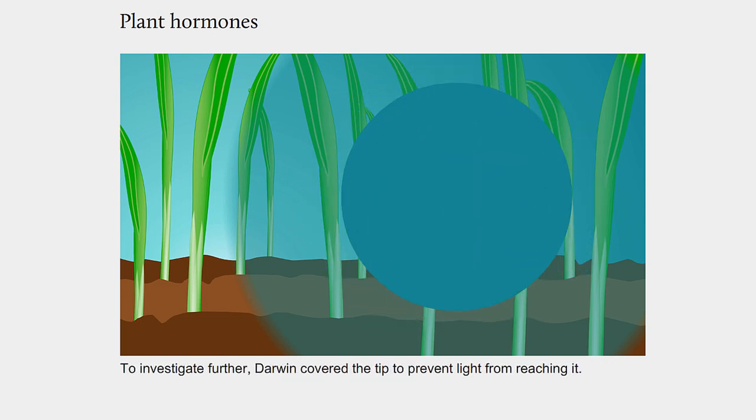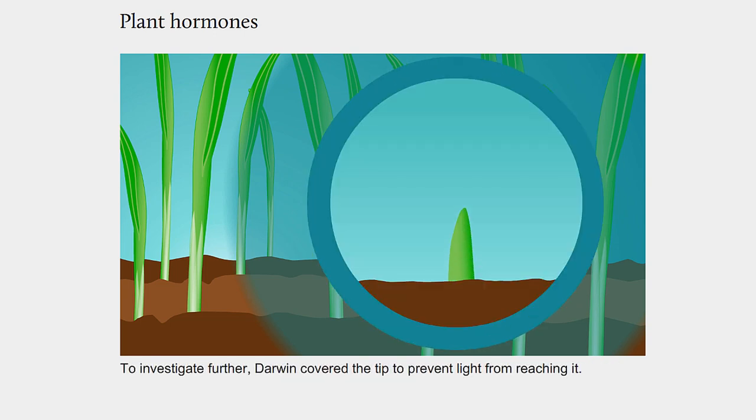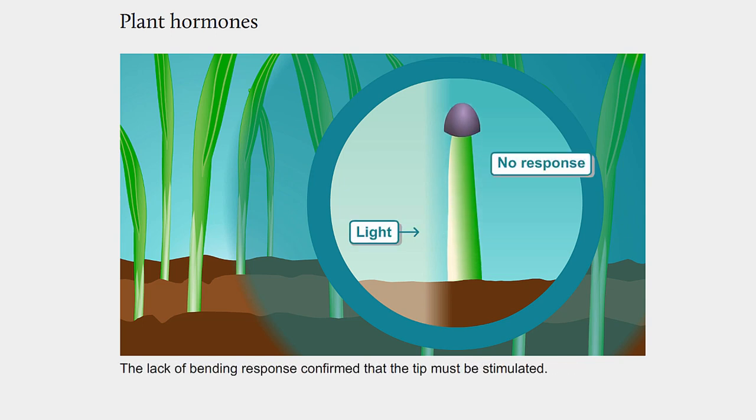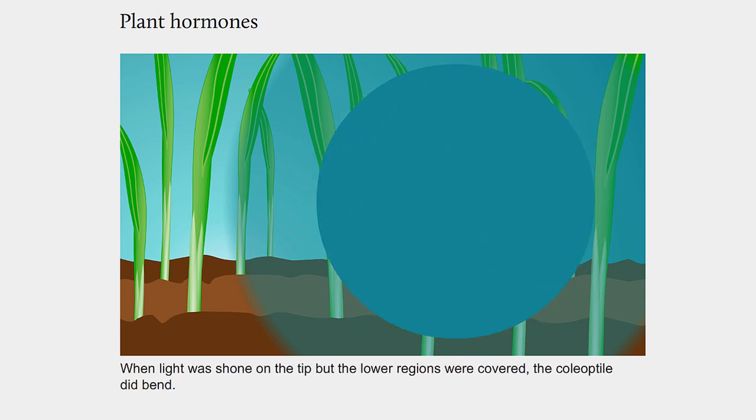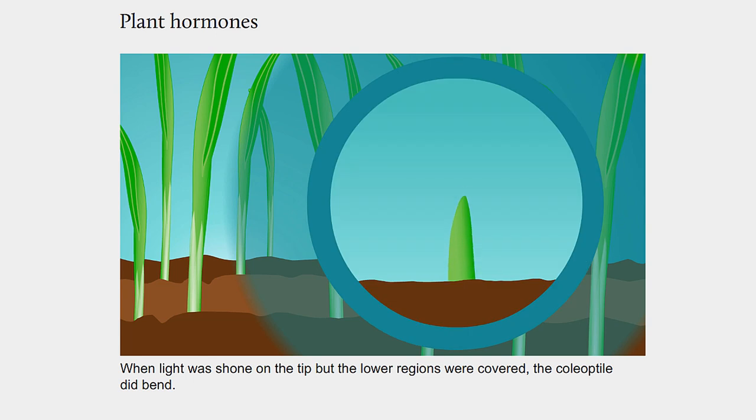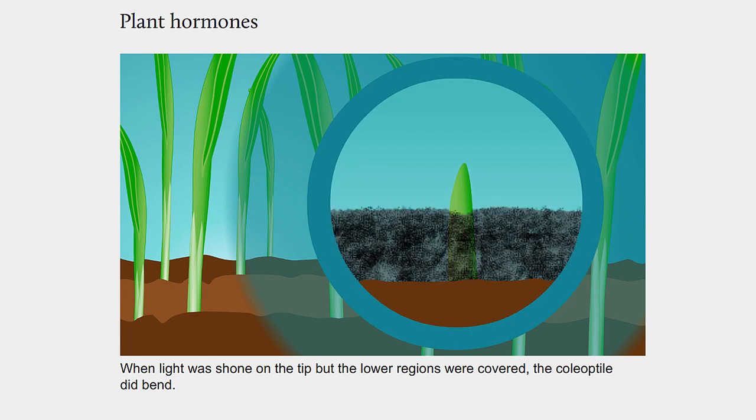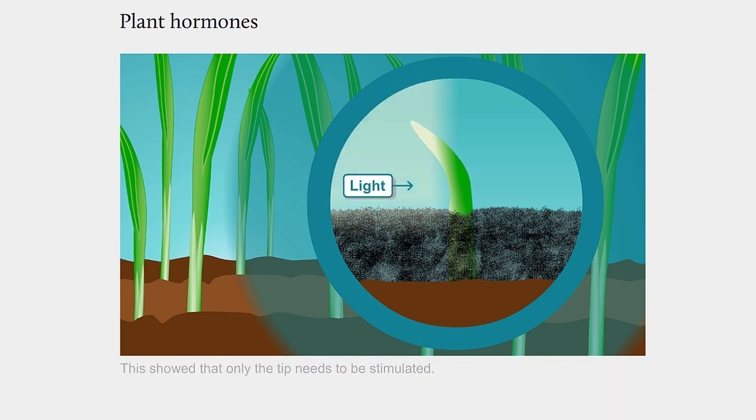To investigate further, Darwin covered the tip to prevent light from reaching it. The lack of bending response confirmed that the tip must be stimulated. When light was shone on the tip but the lower regions were covered, the coleoptile did bend. This showed that only the tip needs to be stimulated.